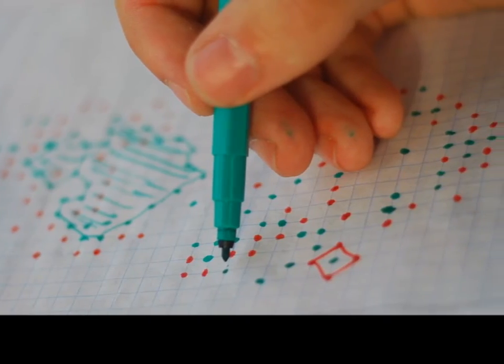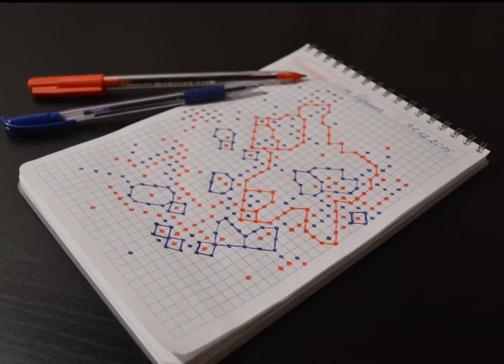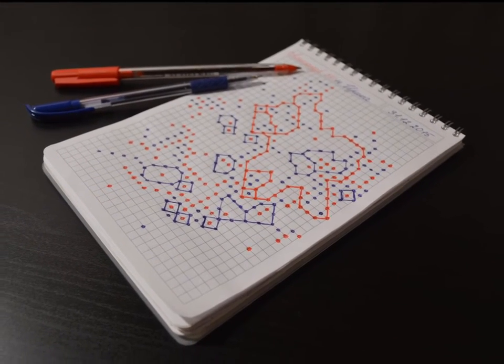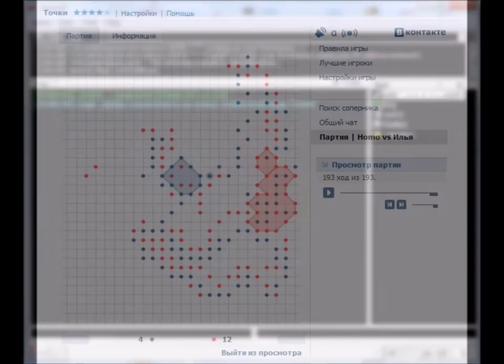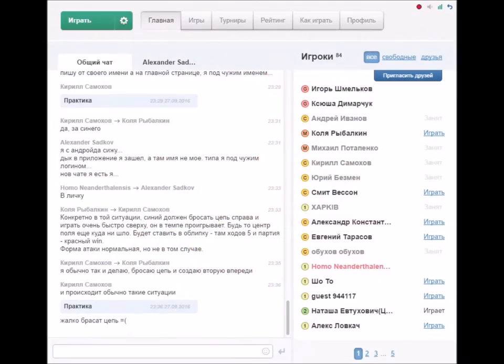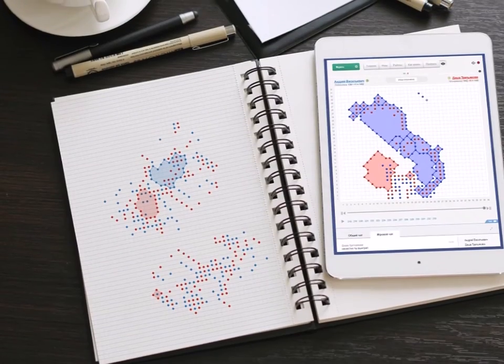The classic Dots game is played with a pen or pencil on a sheet of square paper. Recently, there appeared numerous programs and web clients for playing Dots using computers or mobile devices via Internet.